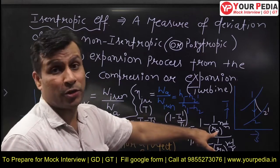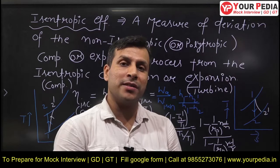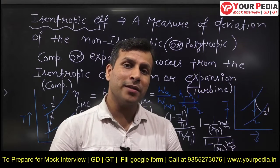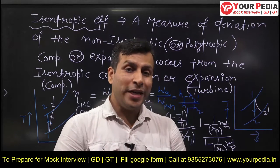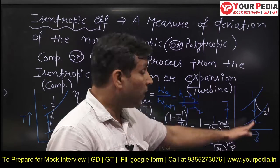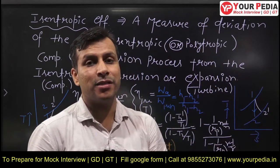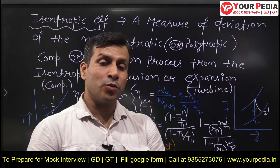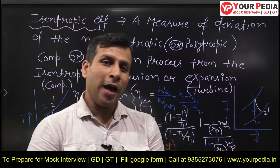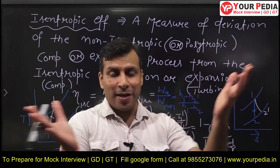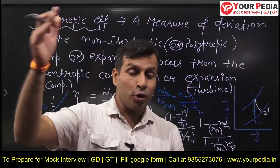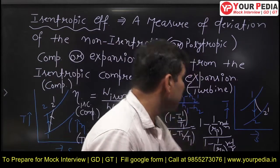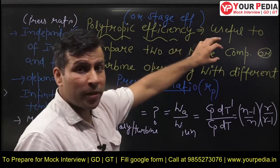So if you have two or three turbines or compressors having different compression ratios, how will you compare their performance? For comparing their performance, we need a parameter that is independent of the initial and final conditions. Some scientists and researchers developed the expression for polytropic efficiency, which is an efficiency that depends on infinitesimally small temperature change. For an infinitesimally small temperature change, it is not dependent on the initial and final conditions. Polytropic efficiency is independent of the pressure ratio.